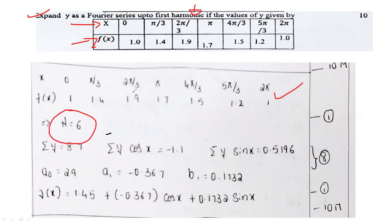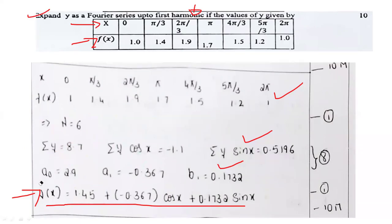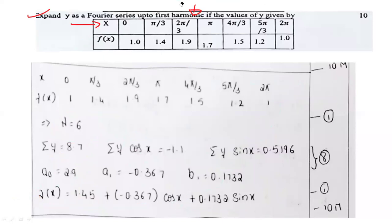These are the given data. First, identify the number of samples — the period will be 6 only. So 2L equals 6, then L equals 3. Compute sigma y. Then compute y cos(x) and y sin(x), as in the previous problem. a0 will be 2.9 (so a0 by 2 equals 1.45). a1 equals minus 3.67. b1 equals 0.1732. Substitute in f(x) for the ultimate result. Refer the general Fourier series equation — based upon that you can solve it easily. You can also make use of the data handbook.